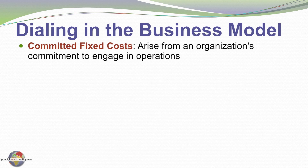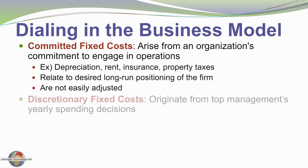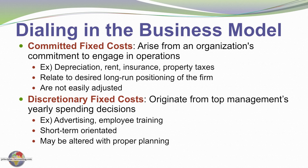We also need to think about fixed costs as potentially committed in nature. They arise from an organization's commitment to engage in operations — depreciation, rent, insurance, property taxes. These costs we're not going to avoid; they relate to our desired long-run positioning for the firm and are not easily adjusted. Other fixed costs, however, are discretionary in nature — they originate from top management's yearly spending plans, such as an annual advertising budget or an employee training program. These fixed costs tend to have a short-term focus and can be adjusted with proper planning. If the business cycle is turning down, we may eliminate certain discretionary fixed costs in order to maintain efficiency in our business model.